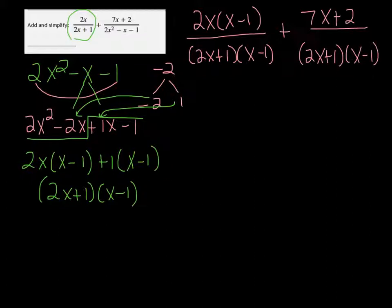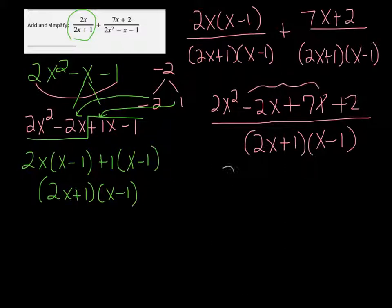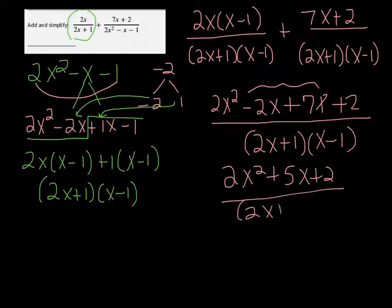So we're going to distribute the 2x and we're going to get 2x squared minus 2x and then add the numerator of the other side. So plus 7x plus 2 and combine it all over the same denominator. Since they both have the same denominator, we can do that. And then we can combine like terms and get 2x squared plus 5x plus 2 all over the 2x plus 1 times x minus 1.